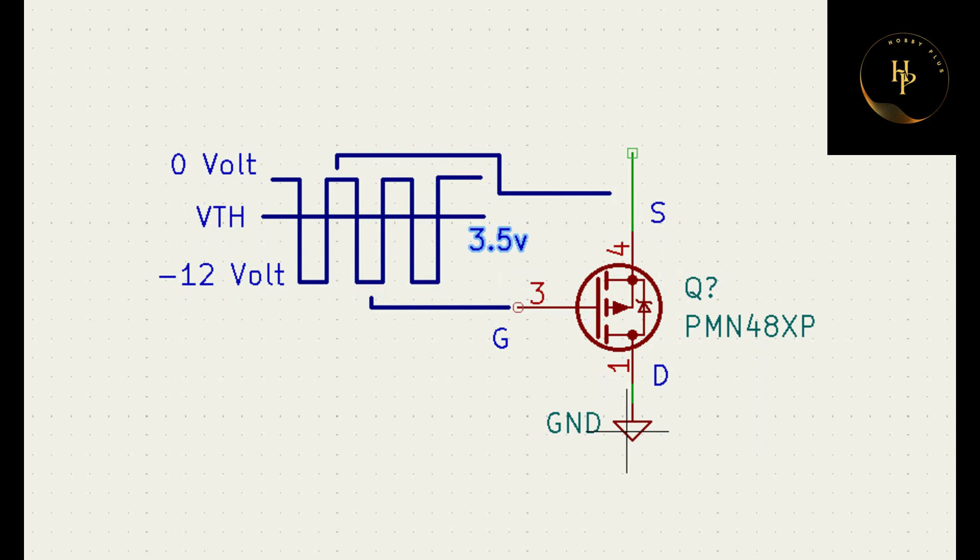When you measure this P-channel transistor, P-channel IGBT, P-channel MOSFET, you always measure the gate voltage respect to source, not to drain or ground.